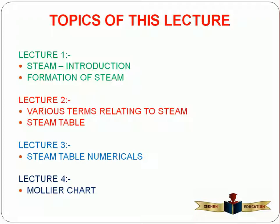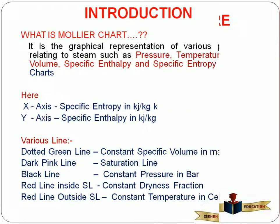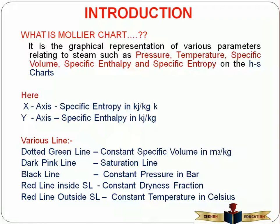This is our fourth lecture. In this lecture, we study about the Mollier charts. First of all, what is a Mollier chart? As we know, there are different charts relating to steam — TS chart, HS chart, PV chart, different charts that are available. However, when we get a graphical representation for the different parameters relating to steam, such as pressure, temperature, specific volume, specific enthalpy, and specific entropy on the HS chart — that is the specific enthalpy and specific entropy chart — then that graphical representation is known as the Mollier chart.